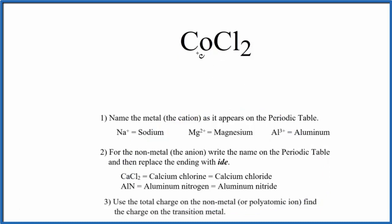First, we write the name of the metal as it appears on the periodic table—that's cobalt. Next, we write the name of the nonmetal, which is chlorine, and replace the ending with -ide.